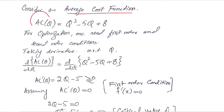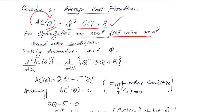Average cost depends upon the output, just like the total cost, and the specific function is q squared minus 5q plus 8. For optimization, one needs first order and second order conditions, which we already know from our knowledge of optimization.